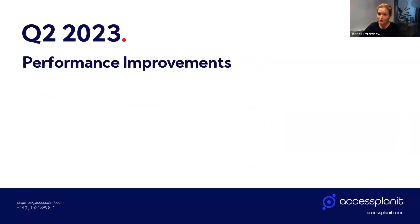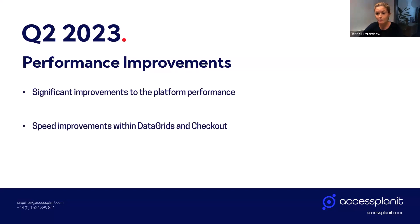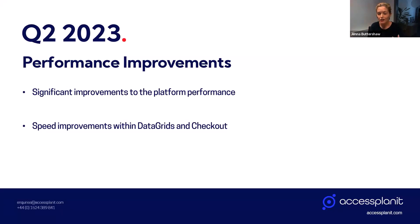Also this quarter, we've rolled out some quite big performance improvements across the platform. The biggest changes are speed improvements with the platform data grids and the checkout basket being the big focus. There's also been big improvements made with the invoice generator as well. While performance improvements aren't particularly exciting, this has been quite a huge project and has made a big difference to the general experience of using the platform — hopefully you've all felt the benefit of that.